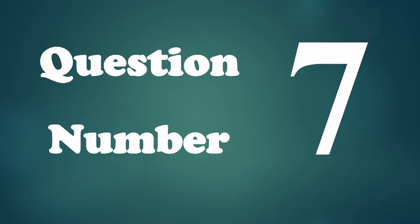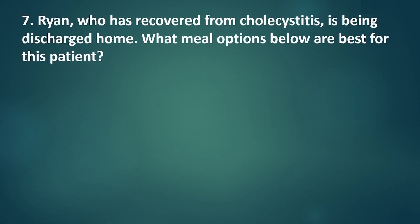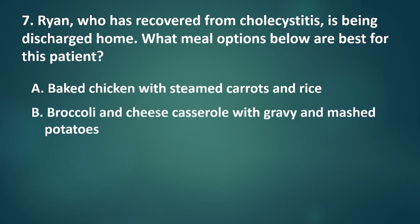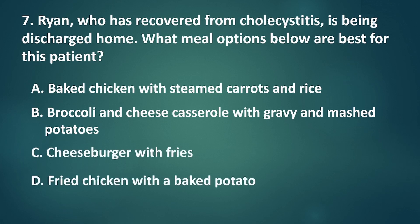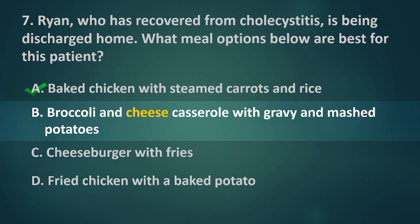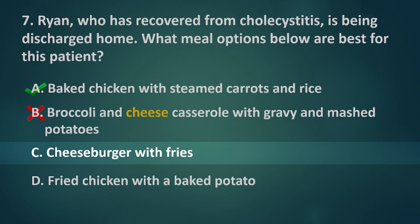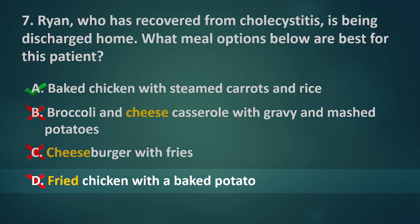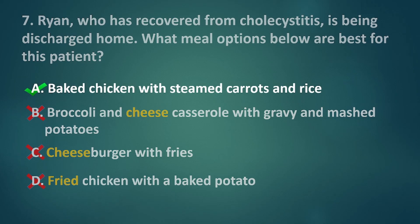Question number 7. Ryan, who has recovered from cholecystitis, is being discharged home. What meal options below are best for this patient? A. Baked chicken with steamed carrots and rice. B. Broccoli and cheese casserole with gravy and mashed potatoes. C. Cheeseburger with fries. D. Fried chicken with a baked potato. Patients with gallbladder disorders are advised to take non-fatty foods. Option A — baked and steamed foods are non-oily, so this can be served. Option B — cheese and dairy products are high in fat, not advisable. Option C — cheeseburger is high in fat, not advisable. Option D — fried chicken involves oil cooking, not advisable. Therefore, the correct answer is letter A.